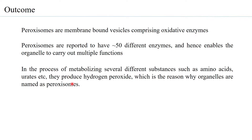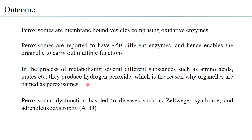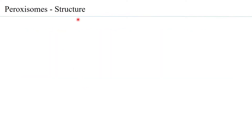In metabolizing substances such as urates, peroxisomes produce hydrogen peroxide as an intermediate, which is then converted to water — this is the reason why this organelle is referred to as peroxisomes. Peroxisomal dysfunction has led to diseases such as Zellweger syndrome and adrenal leukodystrophy, that is ALD.